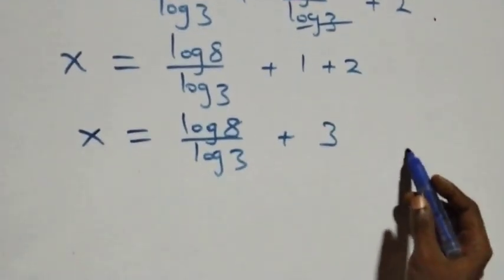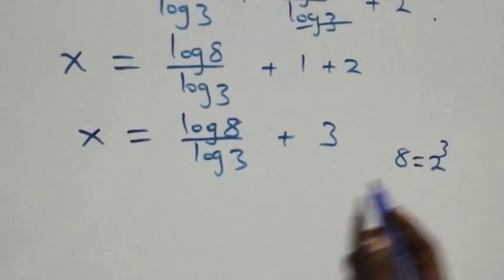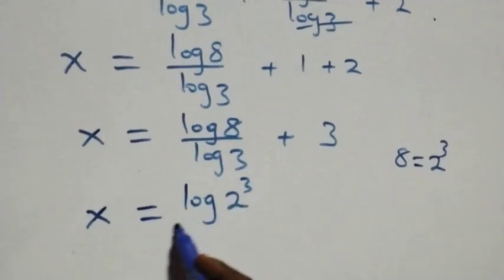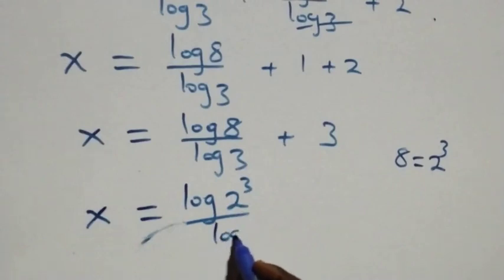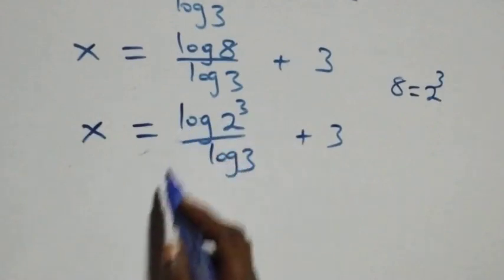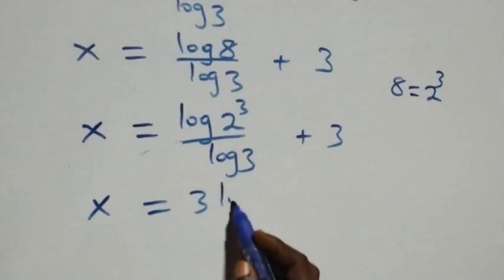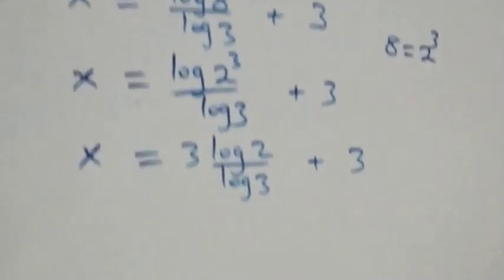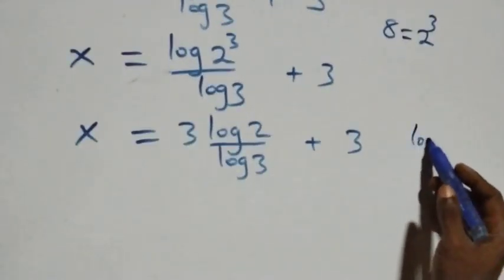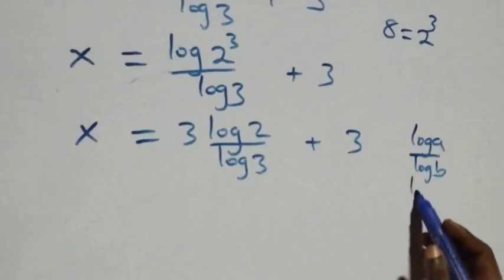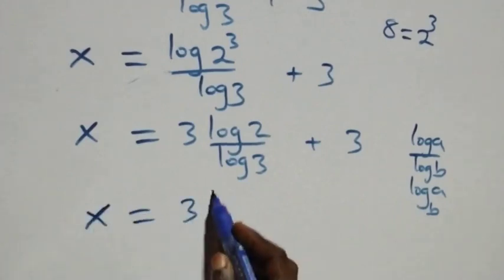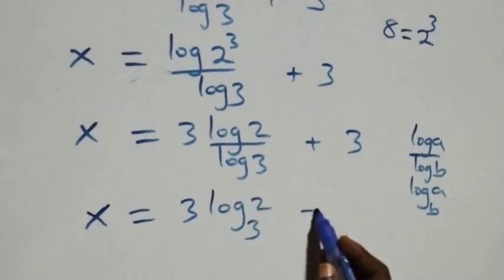This gives x equals log eight over log three plus three. Also, eight can be expressed as two raised to power three. So what we have becomes x equals log of two raised to power three, over log three, plus three. Applying the power rule of logarithms, three comes down: x equals three times log two over log three, plus three. Since log a over log b is the same as log a to base b, we have x equals three log two base three, plus three.